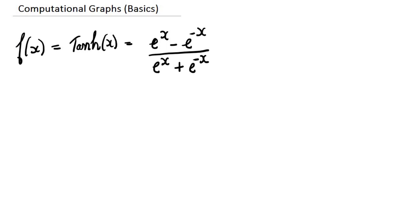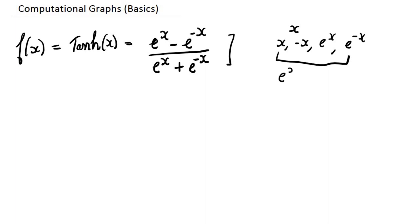We will start with a rather simple example of a mathematical function tanh(x) and then apply a computational graph on top of it. We will then validate the results with the actual computations. We will now expand the term tanh(x). If we start with just x, this expression is entirely made of x, e raised to x, and e raised to minus x. Once we determine all these values, we can find the numerator and denominator. The computational graph representation will then become easy.